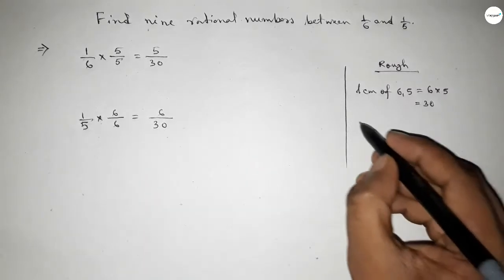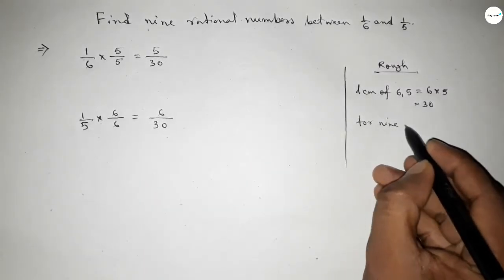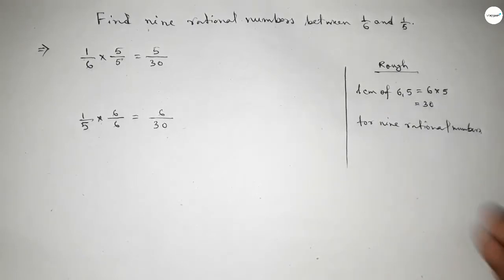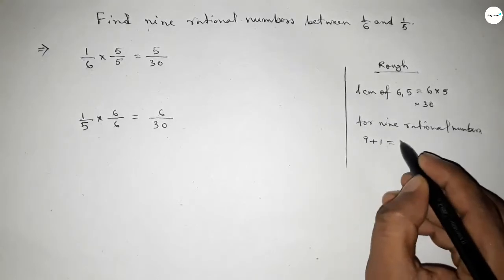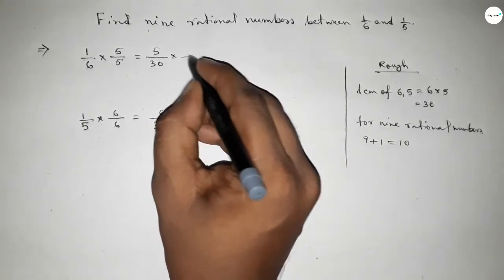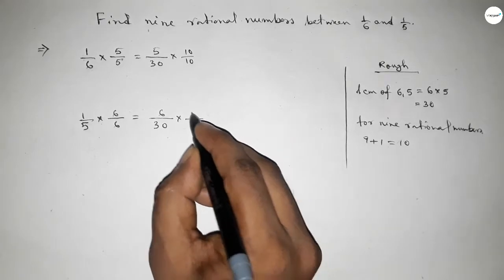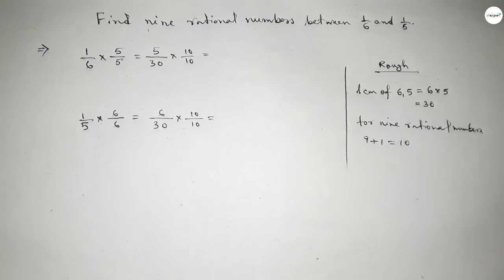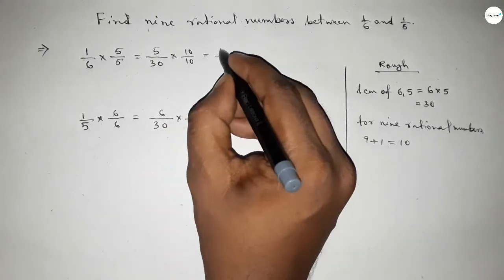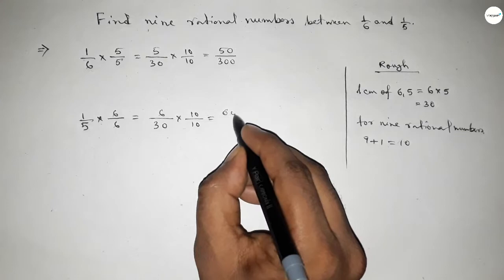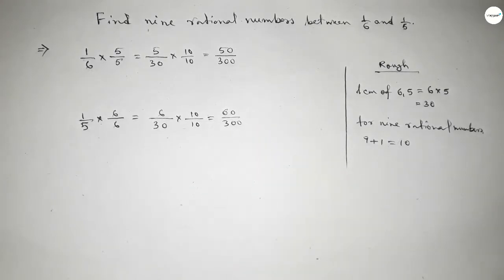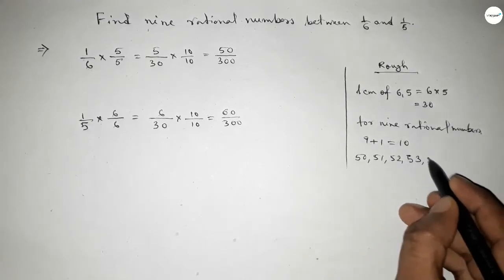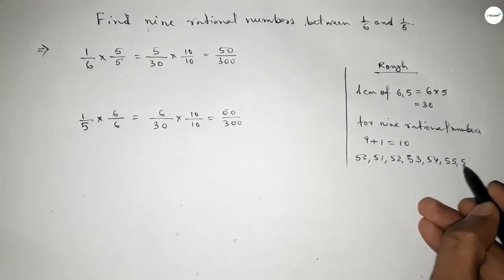Now for finding nine rational numbers between any two numbers, we have to follow this method. We should multiply by 9 plus 1 equals 10. So here 10/10. Now this is 50/300 and this is 60/300. Between 50 to 60, we can get nine natural numbers, and by these numbers we can form nine rational numbers.